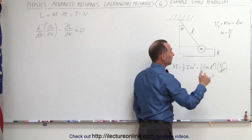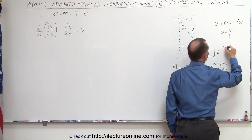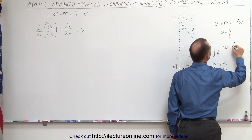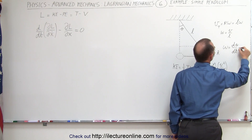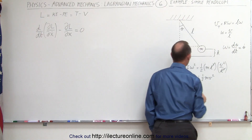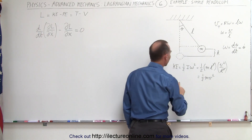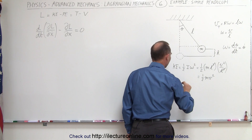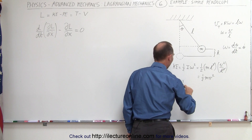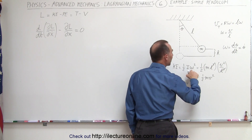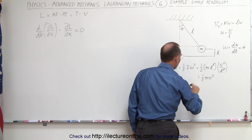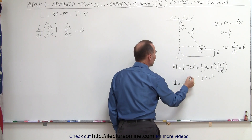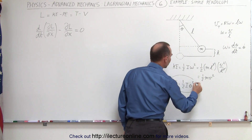Instead, what we can do is express the kinetic energy in terms of theta. Notice that omega is equal to the time derivative of theta, which is theta dot. So the kinetic energy in generalized coordinates becomes one-half I times theta dot squared. Now we have kinetic energy expressed in terms of theta.